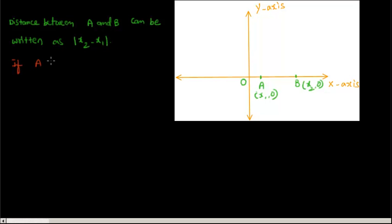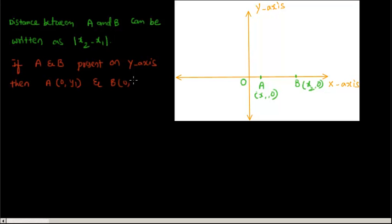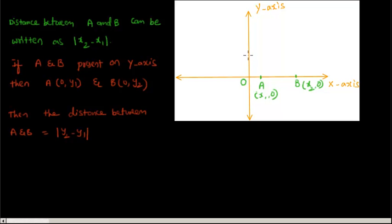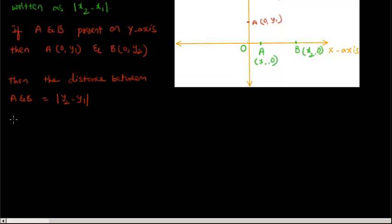Now if A and B are points on the y-axis, then A can be written as (0, y1) and B as (0, y2). The distance between the points A and B is equal to the modulus of y2 minus y1.